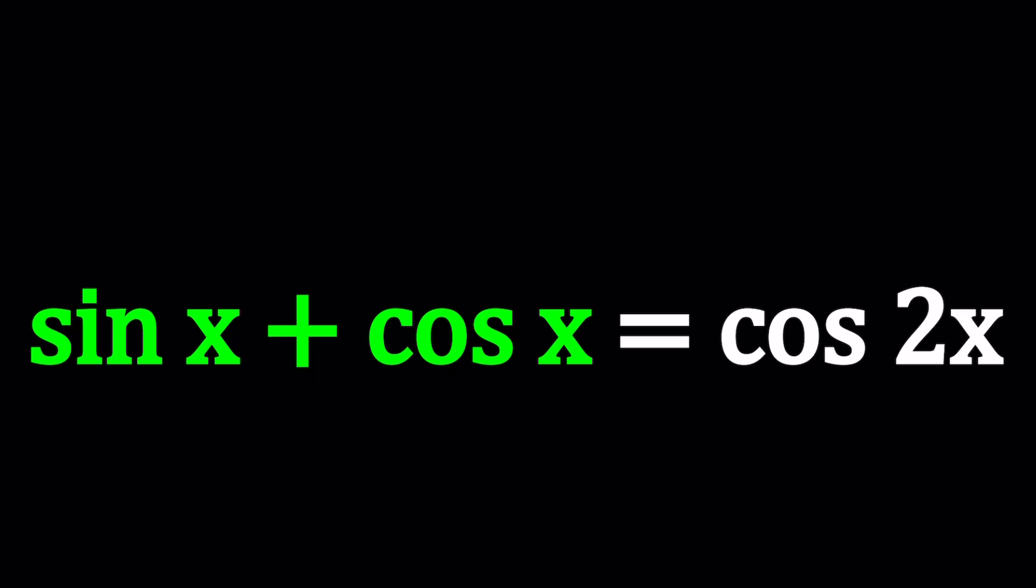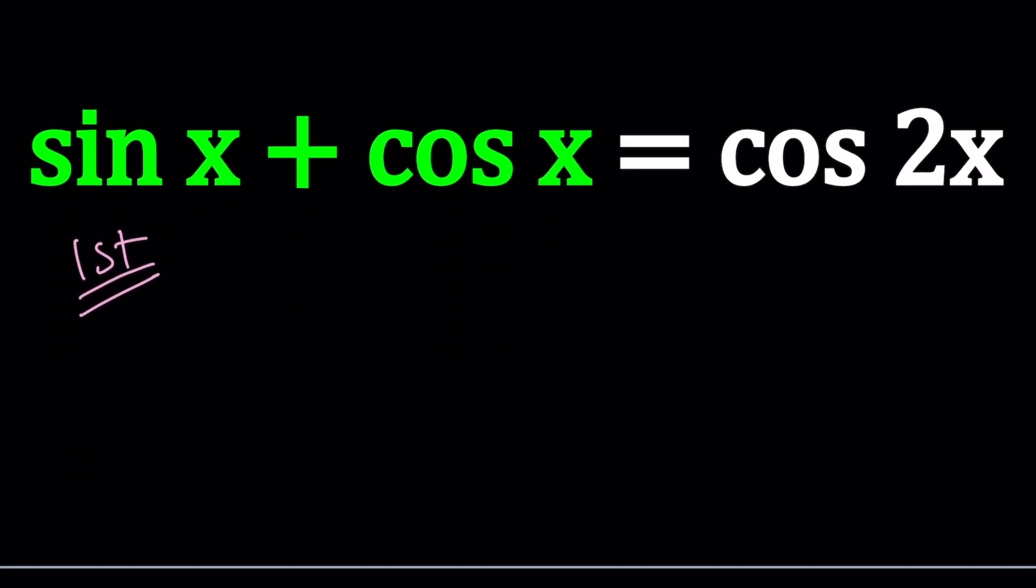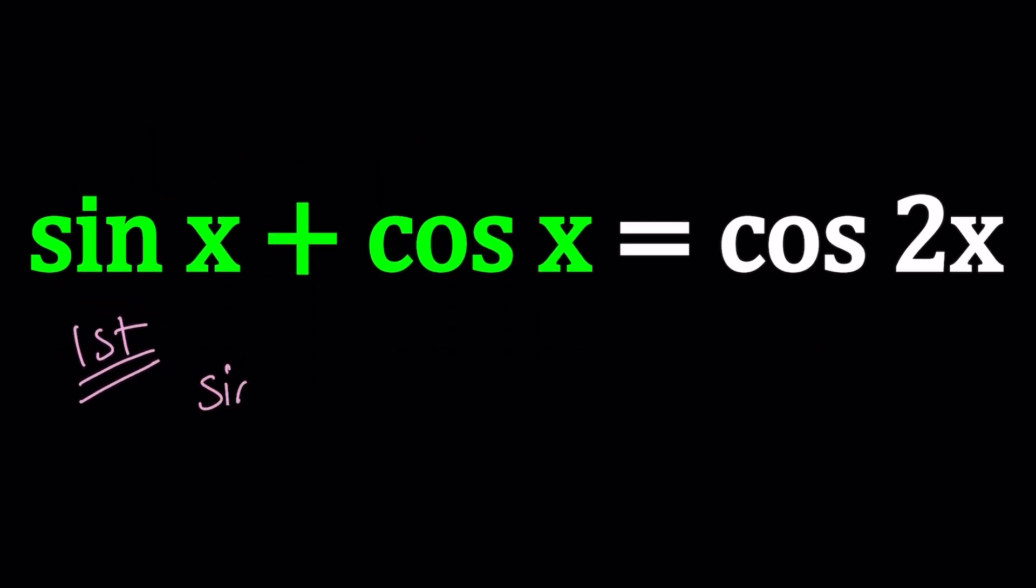I'll be presenting two methods and we'll talk about the possibility of a third method. Alright, so let's start with the first one. For my first method, I'm going to do what is kind of more typical. I'm going to set these equal to each other and square both sides.